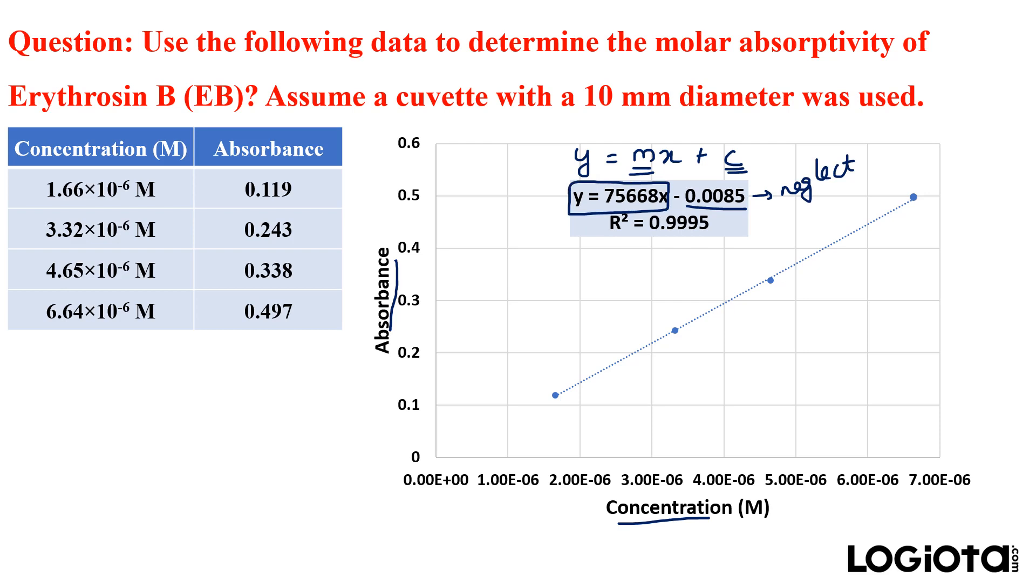Now according to Beer-Lambert law A equals epsilon c l where A is absorbance, epsilon is molar absorptivity which we need to calculate here, c is the concentration and l is the path length.